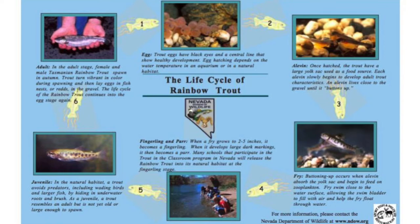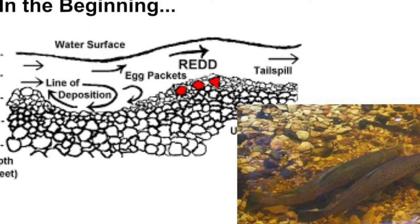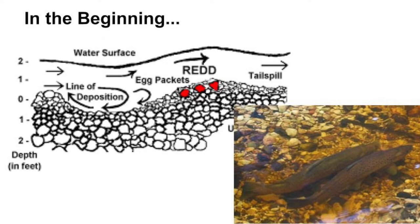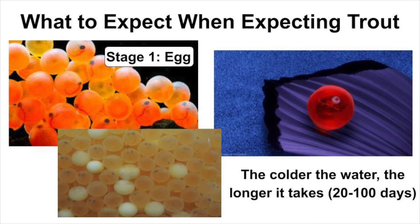Now that you have a bit of background on rainbow trout, let's get into their life cycle. In the beginning, a female trout will dig a nest or a redd in the gravel to lay her eggs. The male trout will then release milt over her eggs to fertilize them. Due to their ability to camouflage as gravel, the trout parents leave their eggs to develop on their own. Trout eggs have black eyes and a central line that show healthy development. Depending on water temperature, the eggs can take between 20 to 100 days to hatch. The colder the water, the longer the eggs take to hatch. Trout eggs prefer temperatures between 50 and 55 degrees Fahrenheit.